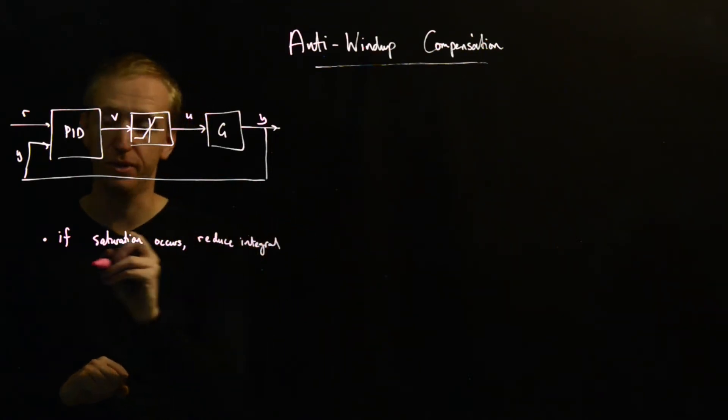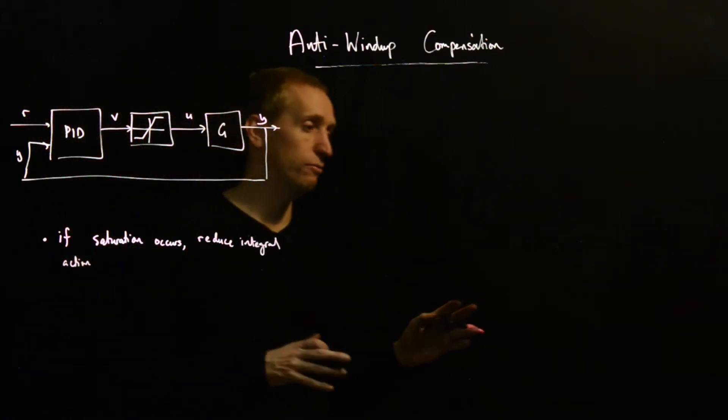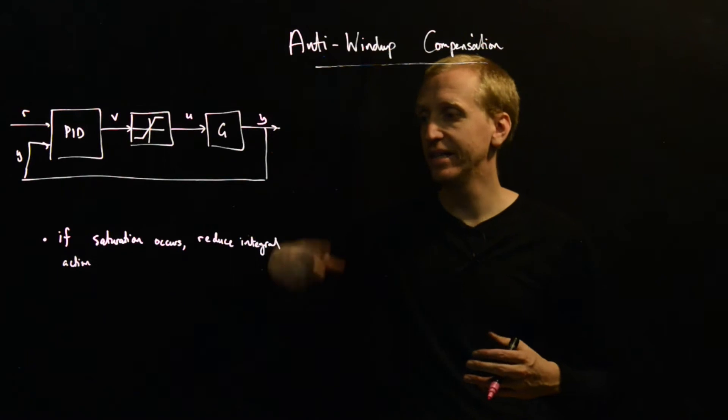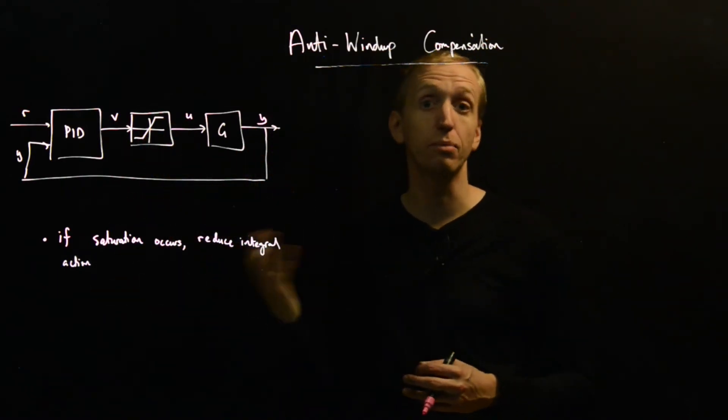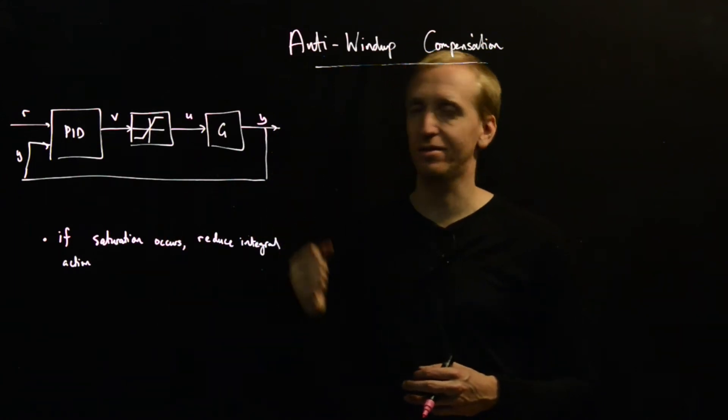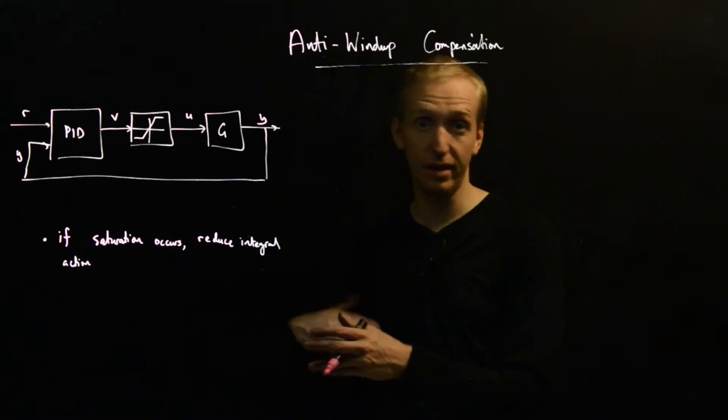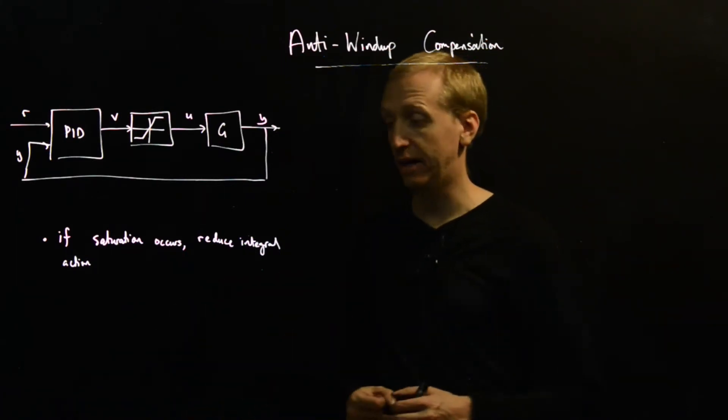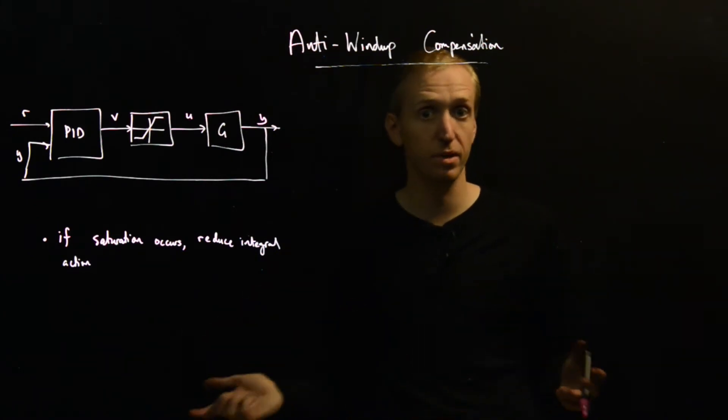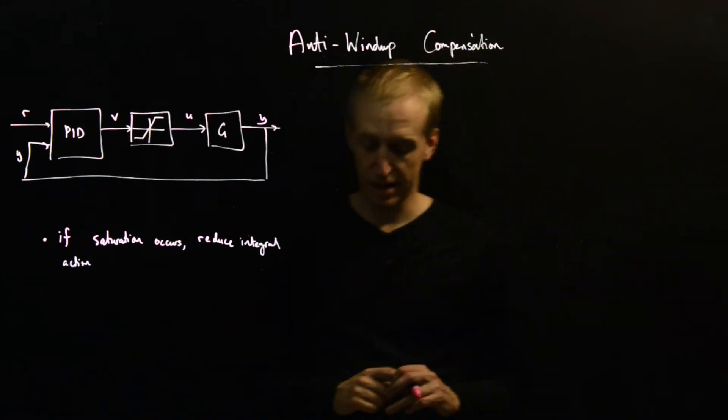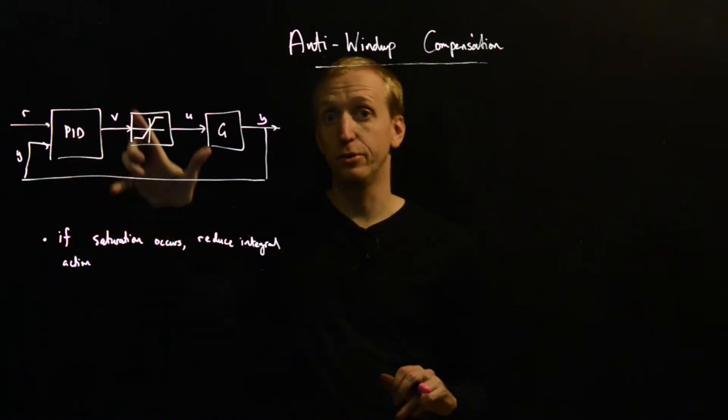And you don't have to use the setup that I'm going to describe now for reducing integral action. I mean, this is the underlying concept here. You want to make some modification to how you implement your control so that you just cap the integral term in some way if saturation is occurring. Because it's the combination of your actuator saturating and this integral term building up that is causing the issue. But I'm going to talk about how to do this in the context of your PID controller.